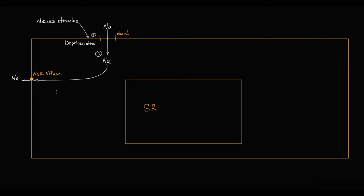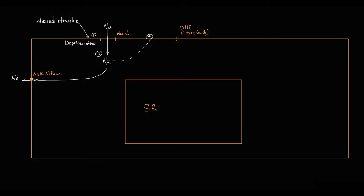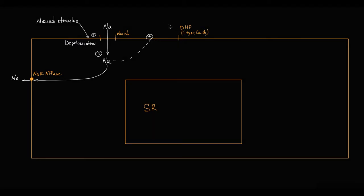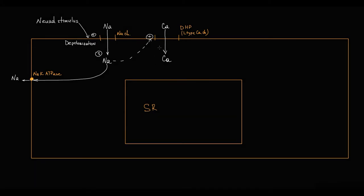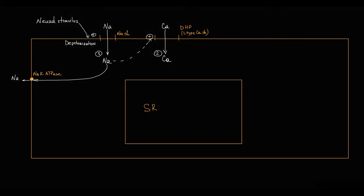Depolarization activates dihydropyridine receptors on the cellular membrane, which are L-type calcium channels. With activation, these calcium channels open, and because calcium is also an extracellular ion, it enters the cell by concentration gradient. This results in an increasing intracellular calcium level — the second step is this sodium-induced increase in intracellular calcium.